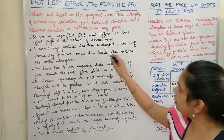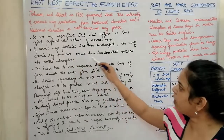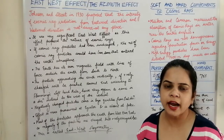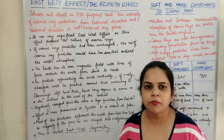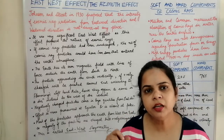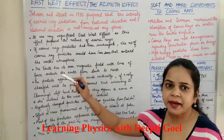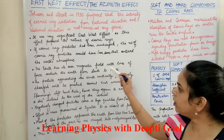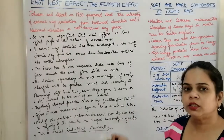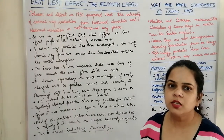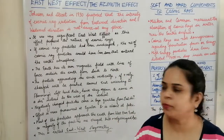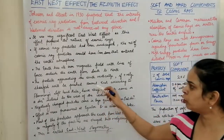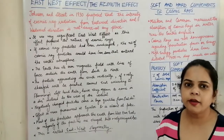If cosmic ray particles had been uncharged, the number entering the earth's atmosphere and the conclusions drawn at a particular place would have been the same. But the instrument measured different values. In the latitude effect we saw the earth has its own magnetic field with lines of force going from south to north. When particles approach the earth vertically, a positively charged particle is pushed towards the east according to Fleming's left-hand rule.